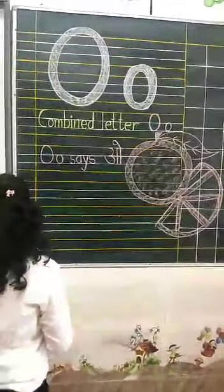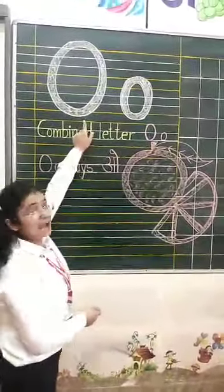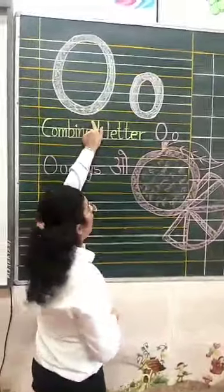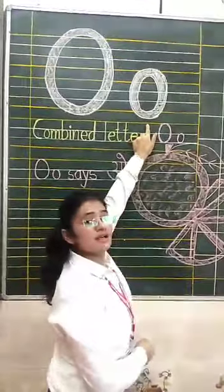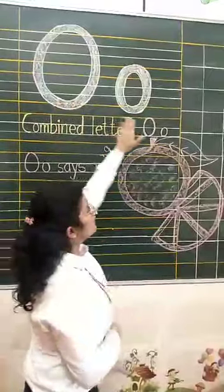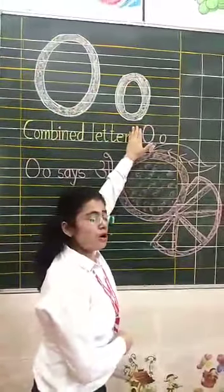See? What is this? Capital letter O. What is this? Capital letter O. And what is this? Small letter O. Okay, big one. And this one is the small O.